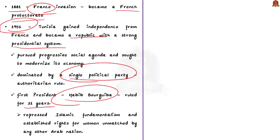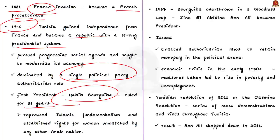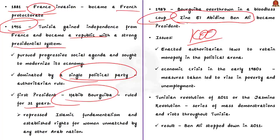Tunisia's first president, Habib Bourguiba, ruled the country like a dictator for 31 years. In 1987, Bourguiba was overthrown in a bloodless coup — a sudden, violent, and illegal seizure of power. In his place, Zine El Abidine Ben Ali became the next Tunisian president, but he was also a dictator. These two dictators enacted authoritarian laws to retain monopoly in the political arena.